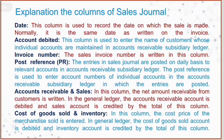Explanation of the columns of the sales journal. Date column: This column is used to record the date on which the sale is made. Normally it is the same date as written on the invoice.